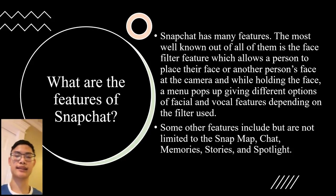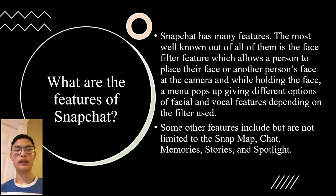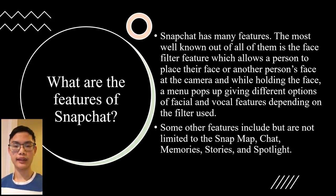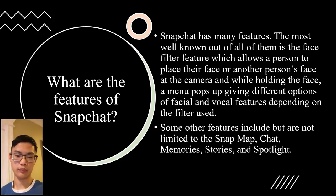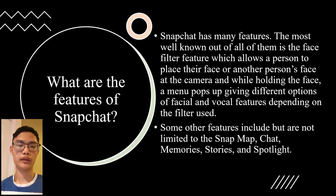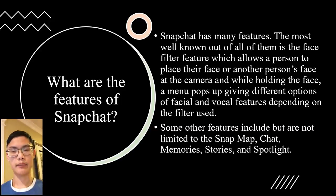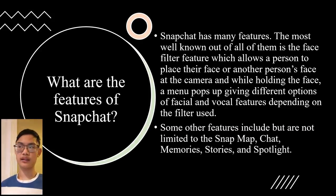Some of the features of Snapchat include a filter feature where you hold your face in the camera and it will show a swirling icon, giving you a list of filters or items that you can use to customize your emotions and face. Other features outside of the facial filters include the Snap Map, the chat feature, the Memories where you can save and store photos and videos, Stories where you can see what someone has posted, and the Spotlight.